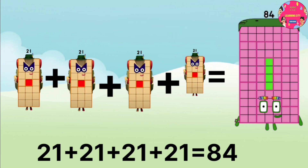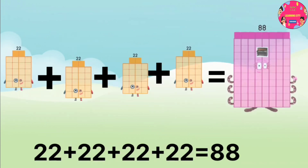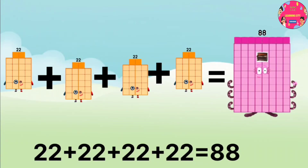21 plus 21 plus 21 plus 21 equals 84. 22 plus 22 plus 22 plus 22 equals 88.